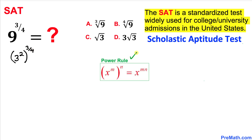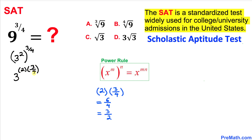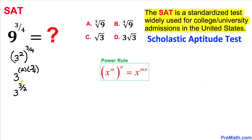Now let's recall the power rule. According to this power rule, we can multiply the two nested exponents, so we get 3 power 2 times 3 divided by 4. Simplifying 2 times 3 divided by 4 gives us 3 over 2, so we can write 3 power 3 divided by 2.